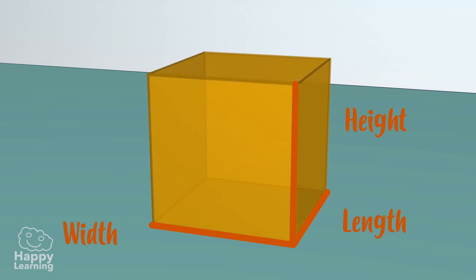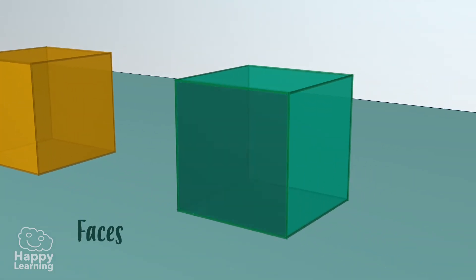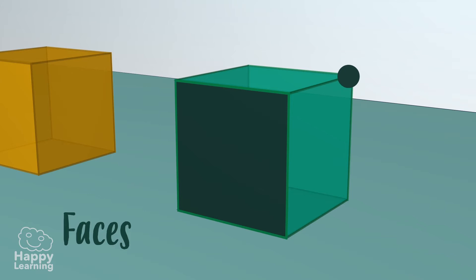A very important thing that you also have to know about polyhedrons is that they are formed by three different elements: faces, vertices, and edges.